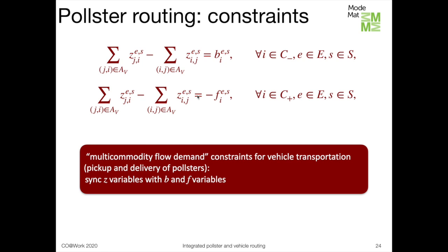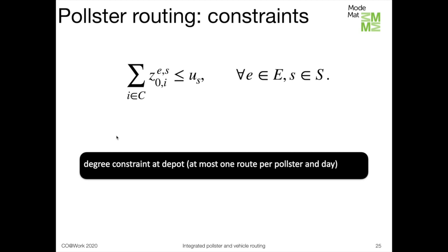The last family of pollster routing constraints are degree constraints at the depot. They specify that at most one service route is assigned to each pollster on each day, and this may only happen if the day is used for data collection — otherwise variable u_s takes the value of 0.